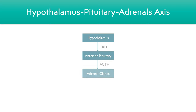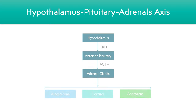This ACTH then acts on the adrenal glands to stimulate the production of three key hormones: aldosterone and other mineralocorticoids, cortisol and other glucocorticoids, and androgens or sex hormones. This entire process is governed by a negative feedback loop, so as the levels of these hormones increase, it feeds back on the anterior pituitary gland and the hypothalamus to reduce production of the hormones, helping to keep the whole system in check.